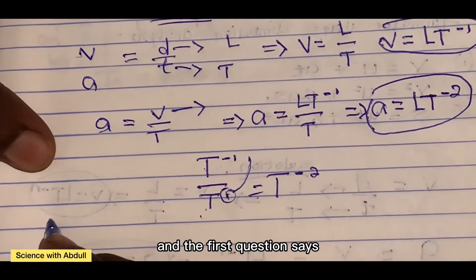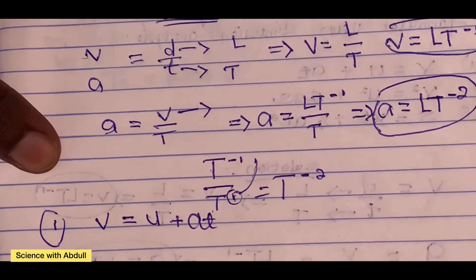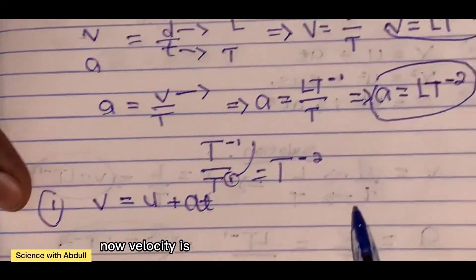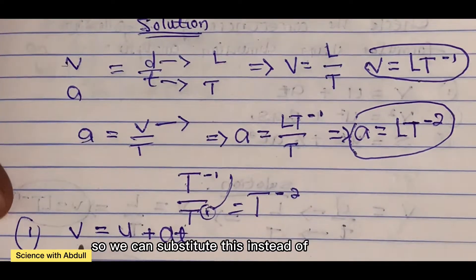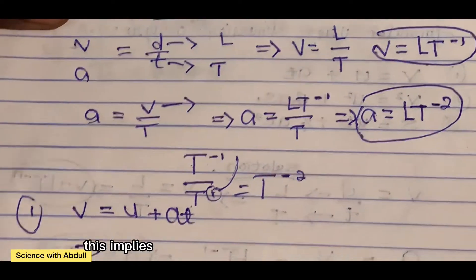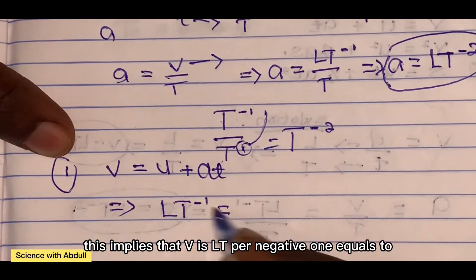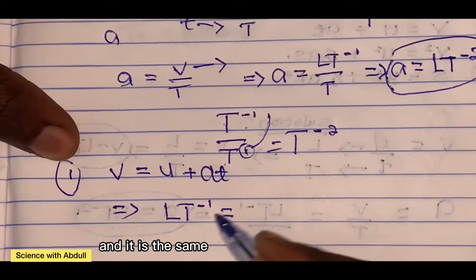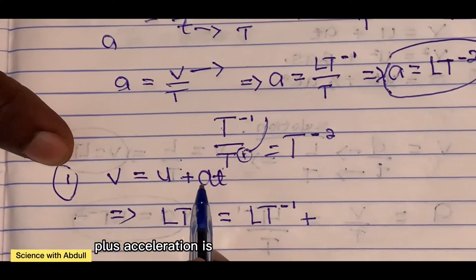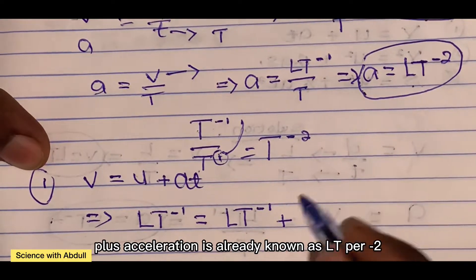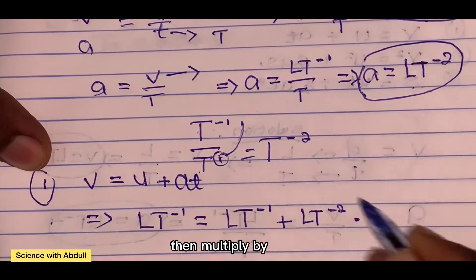The first formula is v equals u plus a t. Velocity is known as L T to the power of negative 1, so we substitute. This implies that L T to the power of negative 1 equals L T to the power of negative 1, plus L T to the power of negative 2 multiplied by T.